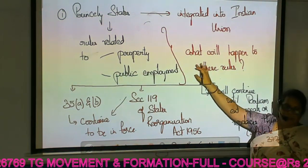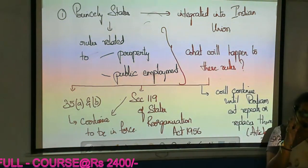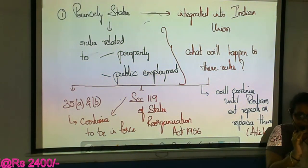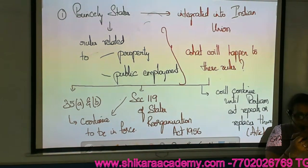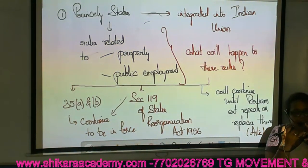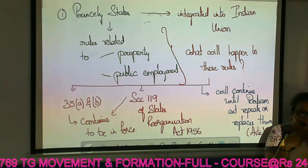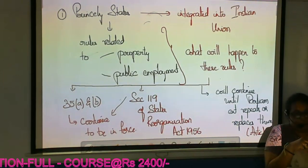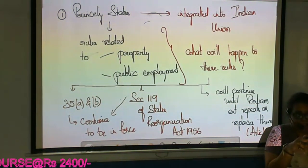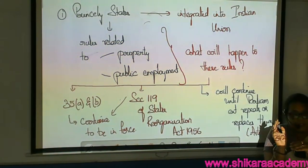Article 16 comes in the context that Telangana is a region within Andhra Pradesh. According to Article 16 Clause 3, only Parliament has the power to give local reservation, but the Constitution is not clear whether this reservation should be given across the entire state or only in one region. If the judge feels it should be given across the state, Mulki rules become invalid. If the judge feels it should be given only in Telangana, Mulki rules become valid.